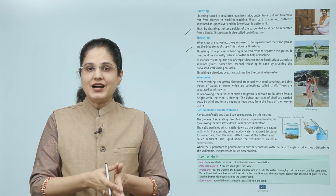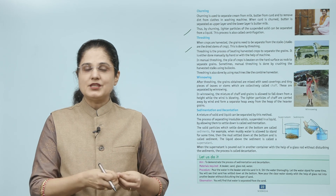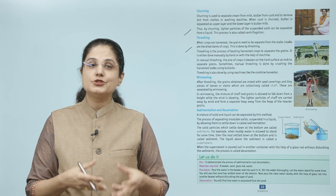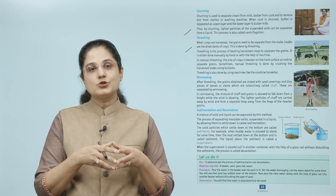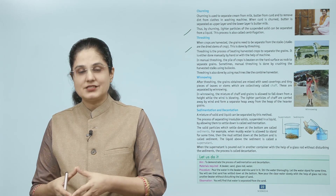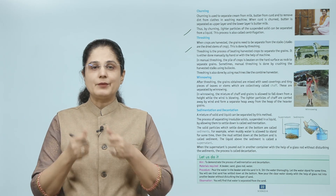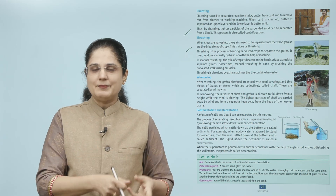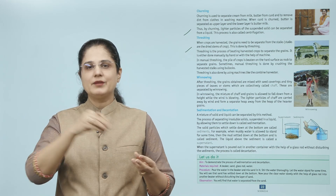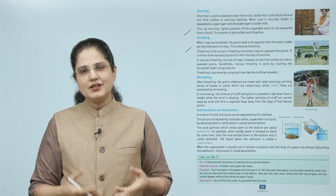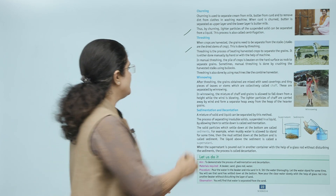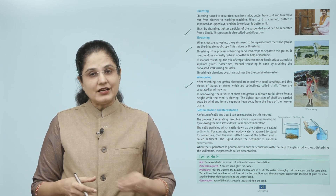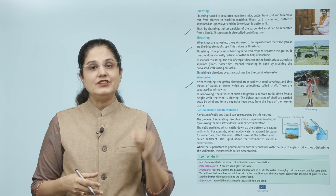It is either done manually by hand or with the help of a machine. In manual threshing, the pile of crops is beaten on a hard surface like a rock to separate grains. Sometimes manual threshing is done by crushing the harvested stalks using bullocks. Threshing is also done using machines like the combine harvester.